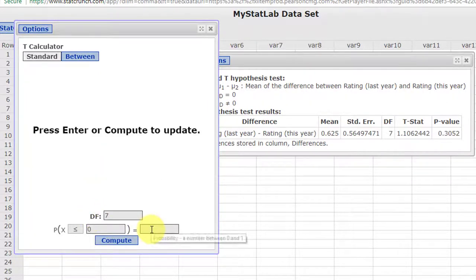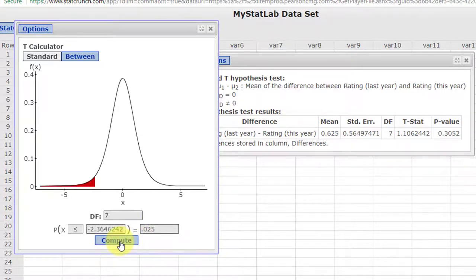And we've got an alpha of 0.05. But this is a two tail. So we put 0.025. And that gives us a lower critical value of minus 2.365 and an upper by symmetry of plus 2.365.